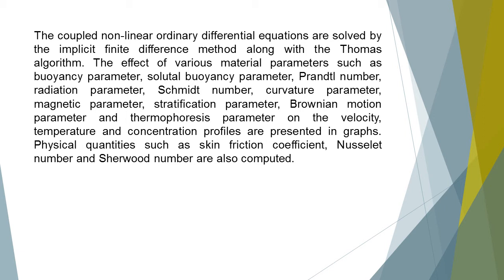The effect of various material parameters — such as buoyancy parameter, solutal buoyancy parameter, Prandtl number, radiation parameter, Schmidt number, curvature parameter, magnetic parameter, stratification parameter, Brownian motion parameter, and thermophoresis parameter — on the velocity, temperature, and concentration profiles are presented in graphs.